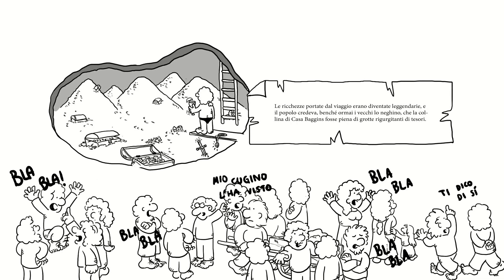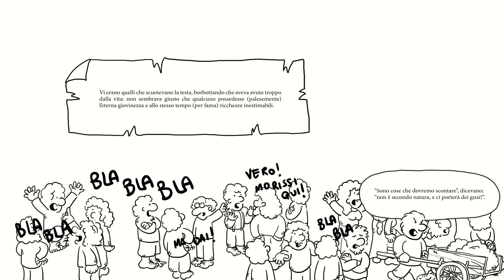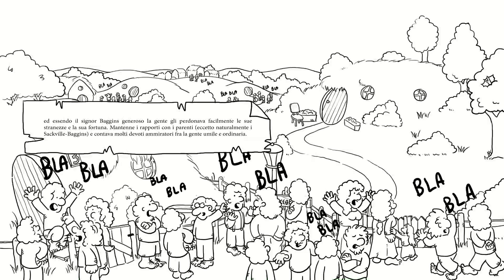Le ricchezze portate dal viaggio erano diventate leggendarie e il popolo credeva che la collina di Casa Baggins fosse piena di grotte rincurcitanti di tesori. Come se ciò non bastasse, contribuiva la sua inesauribile e sorprendente vitalità: il tempo passava lasciando poche tracce sul signor Baggins. A 90 anni era tale quale era stato a 50. Incominciarono a dire che si manteneva bene; sarebbe stato più esatto dire che era immutato. Vi erano quelli che scotevano la testa borbottando che aveva avuto troppo dalla vita: non sembrava giusto che qualcuno possedesse palesemente l'eterna giovinezza e allo stesso tempo per fama ricchezze inestimabili.